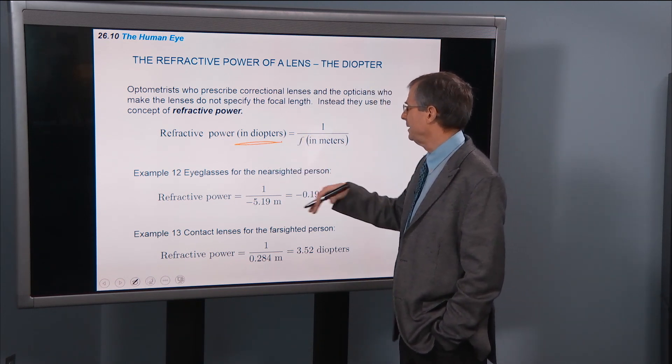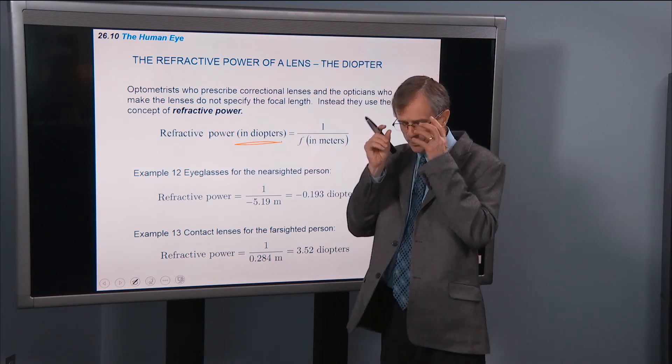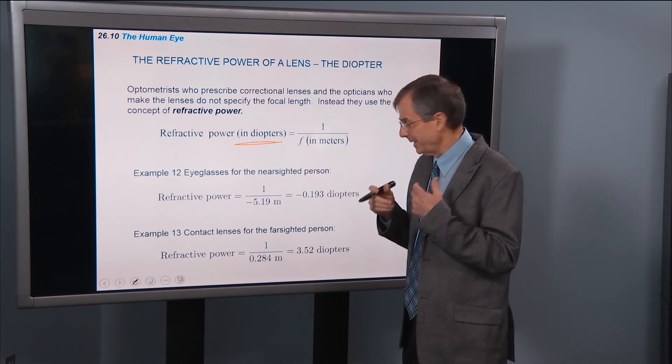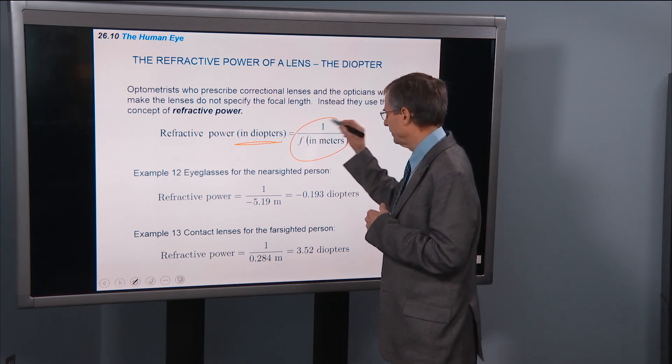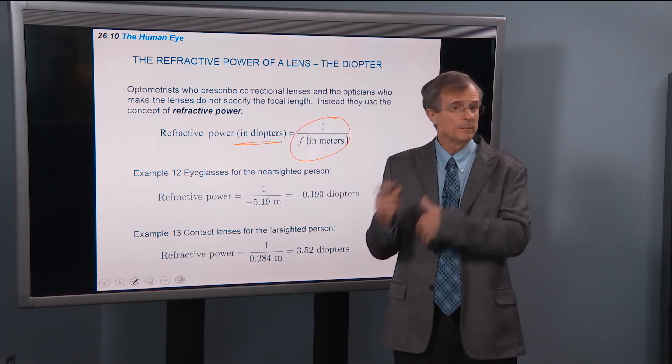and that's actually for the diopters, it's just one over the focal length. So you measure the focal length of the lens in meters, take one over that, that's the diopters.